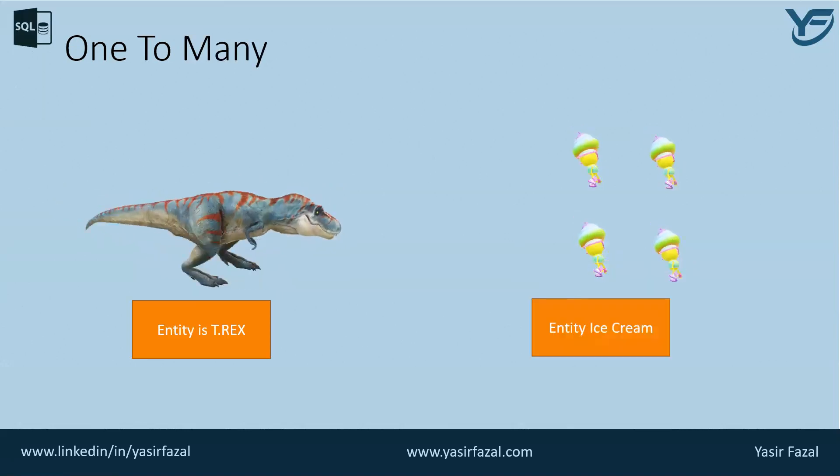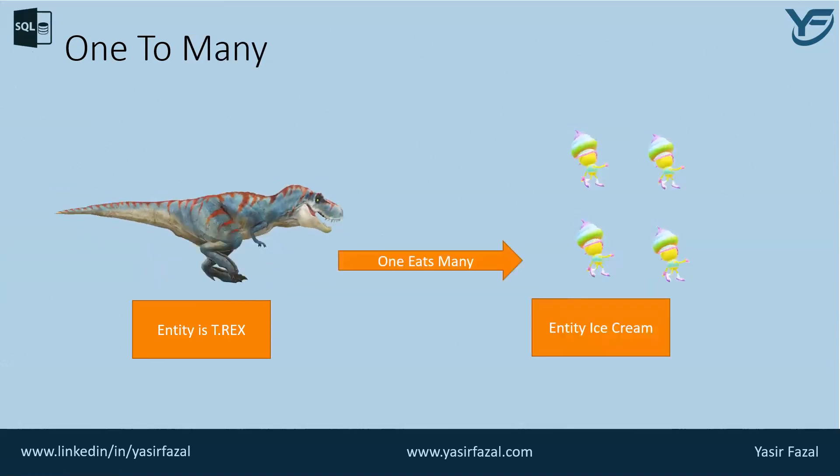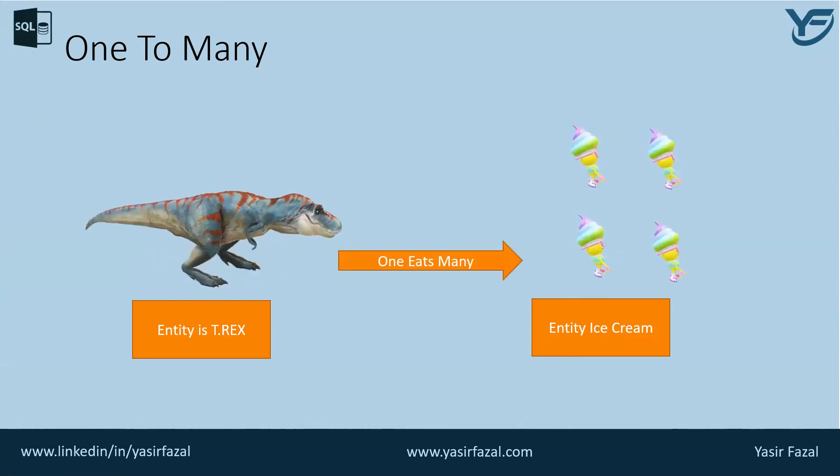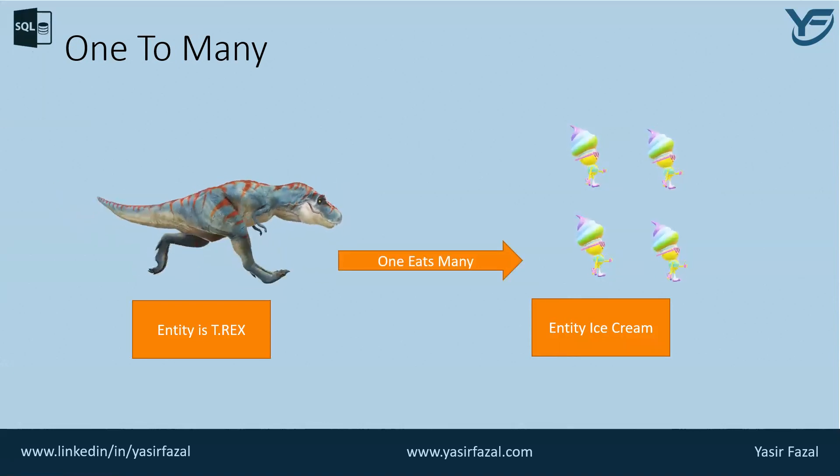Next is one-to-many. There is one entity of T-Rex and then there are multiple entities of Ice Cream, and one T-Rex would like to eat many Ice Creams.